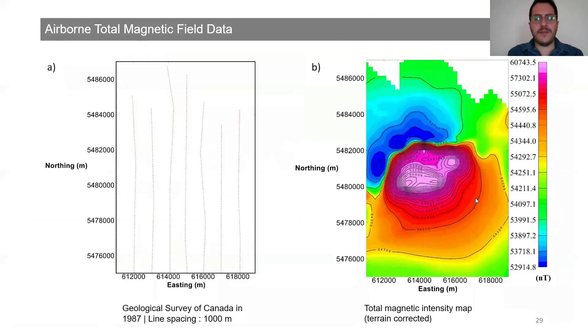Another potential field geophysical method that's usually used in combination with gravity is magnetics, which investigates the subsurface geology based on anomalies in Earth's magnetic field. Here is a survey from Geological Survey of Canada that was conducted in 1987. Figure A shows the flight lines for this survey. The line spacing was a thousand meters and it was kind of coarse. Figure B shows the total magnetic intensity map that was terrain corrected.